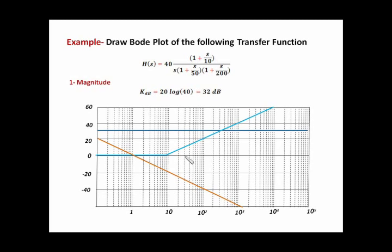Plotting the pole at 50: it goes straight until it hits 50 radians per second, then goes minus 20 dB per decade from there. The last corner frequency is a pole at 200. I locate 200 on the frequency axis and draw a straight line with a slope of minus 20 dB per decade from that point onward.